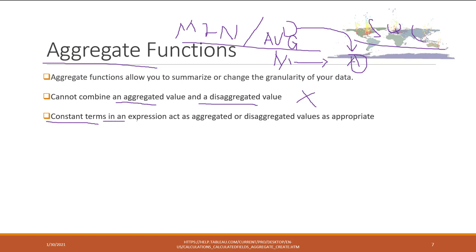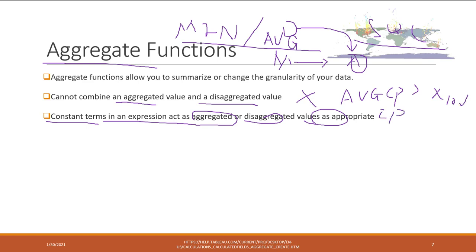A constant can be used either as aggregated or disaggregated as appropriate. For example, we can use AVG(price) times 10 — that is allowed. And if using the price field times 10, that is also allowed. However, you cannot use AVG(price) plus price, because AVG(price) is aggregated and price is disaggregated — so this is not allowed.